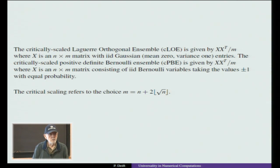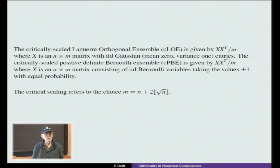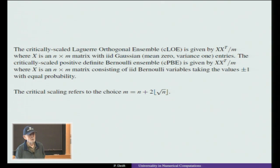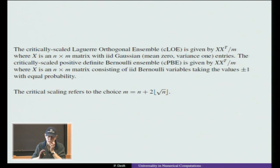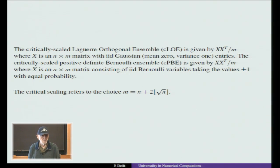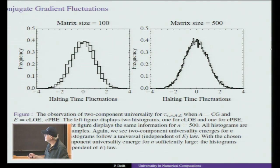The distribution shown is (T - sample mean) / sample standard deviation — both mean and standard deviation vary between ensembles, but only the fluctuation is universal. This is what we call two-component universality: once you know the mean and standard deviation, the rest is universal.